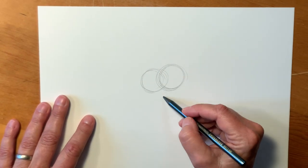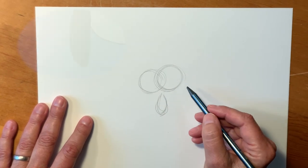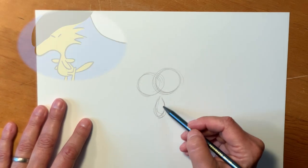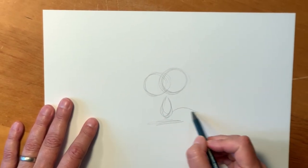And then we're going to do a light shape for his body right here. Charles Schultz's characters, the heads are always really big and the bodies are really small. We have feet, he's got feet, he's got a tail.